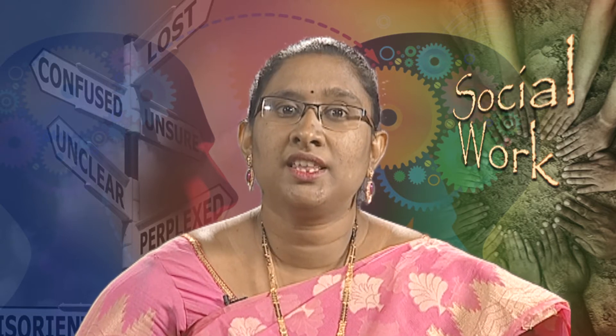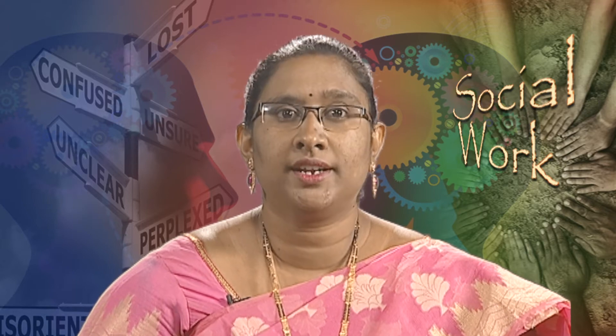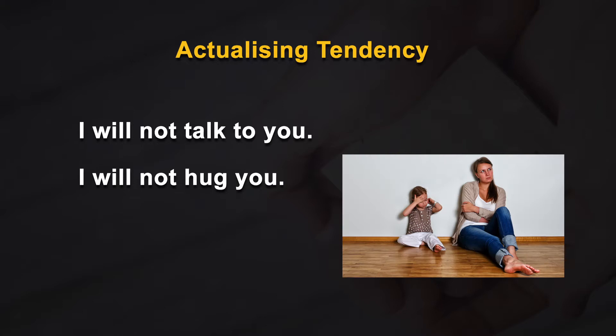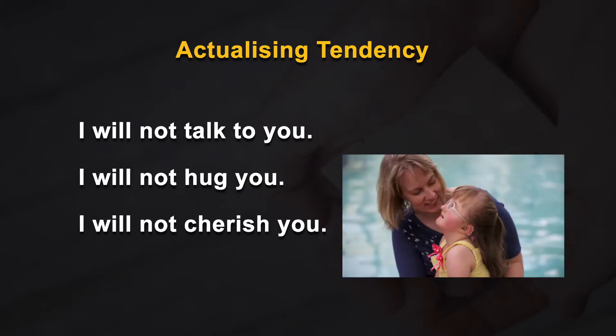They are actually making their love and affection more conditional to the kid: 'If you behave in this way, I will show you my love. When you behave in another way, I will withhold my love. I will not talk to you, I will not hug you, I will not cherish you.' Here, receiving love is more conditional. In order to receive love, the child needs to behave in the accepted way. When parental love becomes more conditional, that will destroy the actualizing tendency.